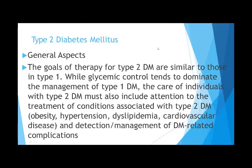For type 2 diabetes, the goals of therapy are similar to type 1, but while glycemic control dominates type 1 management, care for type 2 must also address associated conditions like obesity, hypertension, dyslipidemia, and cardiovascular disease. Many type 2 patients have a long pre-clinical period, so at the time of diagnosis they may already show evidence of complications and comorbidities — this is a key difference between type 1 and type 2.